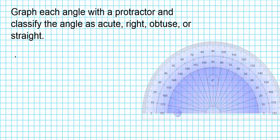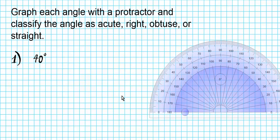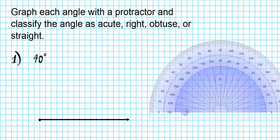For problem number one, let's say we were asked to graph 40 degrees. When you're graphing an angle that's provided to you, the first thing you want to do is draw a line segment. Graph the point first, and then from this point draw a ray. So it's a ray from this point right there. Now we're going to construct 40 degrees starting from this initial ray.